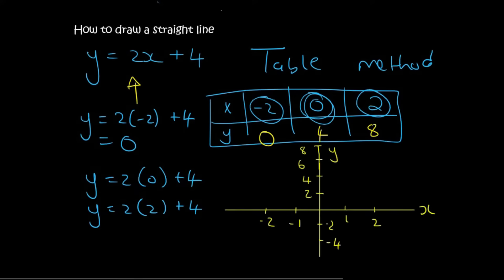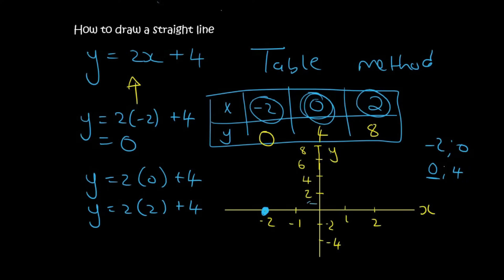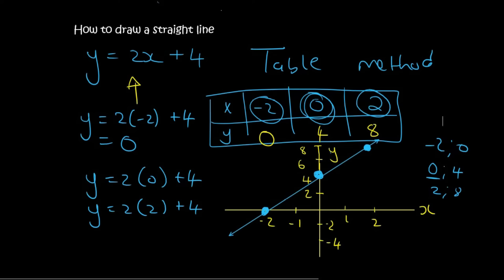We can now draw the graph. Always remember that x is on the horizontal and y is on the vertical. The first point is minus 2 and 0 — an x value of minus 2 but a y value of 0, so it's literally on that x-axis line. Then the second point is 0 and 4 — x is 0, so we go straight up to 4. Then the last point is 2 and 8 — 2 on the x and 8 on the y. We then put a line right through those dots and there you have yourselves a straight line. That is called the table method.